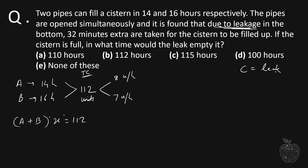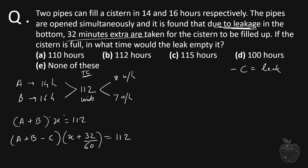Since this is a leak, we add a negative sign. Along with A and B, there was a leak which is minus C, and it took 32 minutes extra. Originally it would have taken X hours, but it took 32 minutes extra. Converting minutes to hours, that gives us X plus 32 by 60 hours, and this fills the entire tank of 112 capacity.